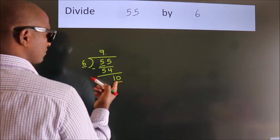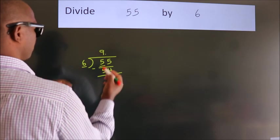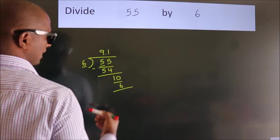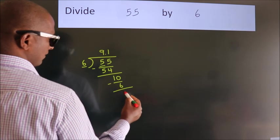A number close to 10 in the 6 table is 6 ones, 6. Now we subtract. We get 4.